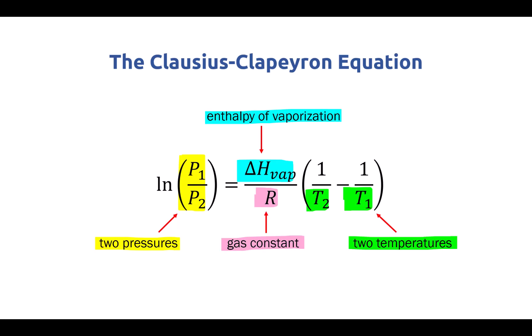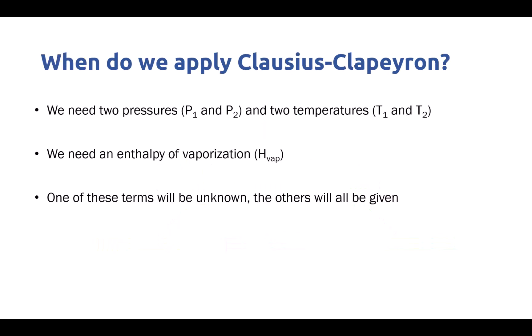So we want to know when we're going to use this equation. The question you're given will need to have two pressures, two temperatures, an enthalpy of vaporization, and one of the terms will be unknown while all the others must be given, because we can only solve an equation with one unknown at a time.